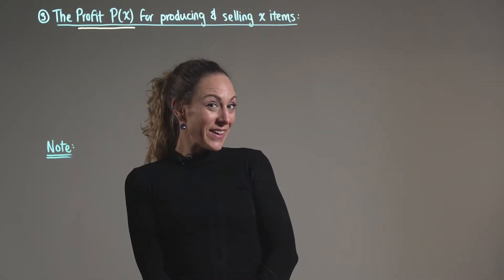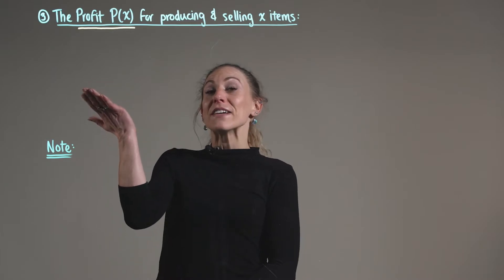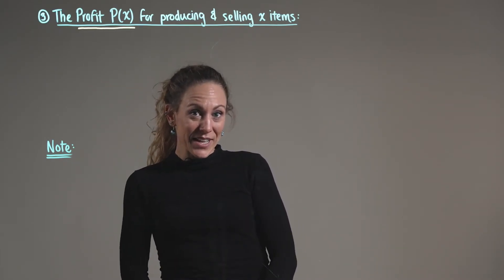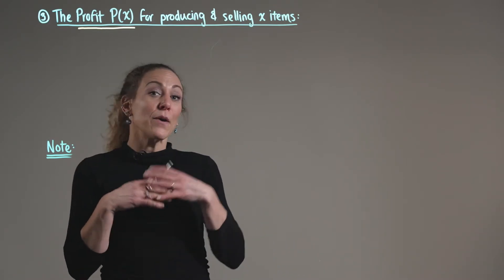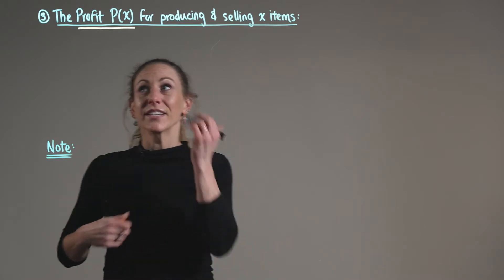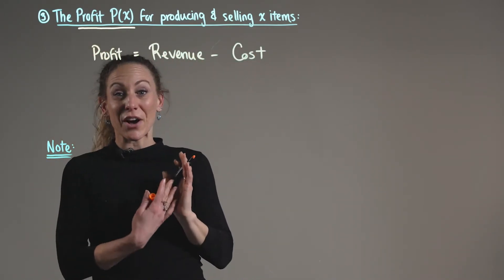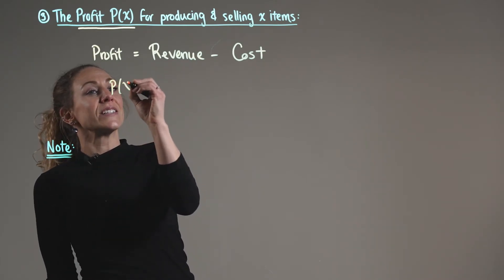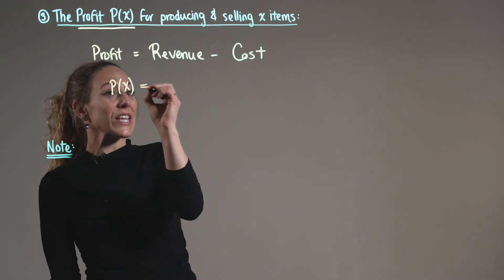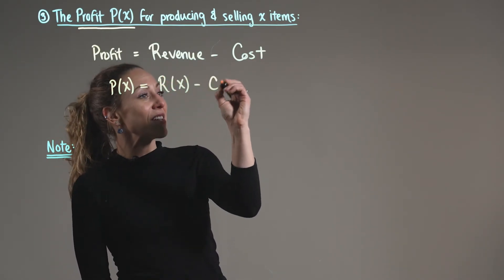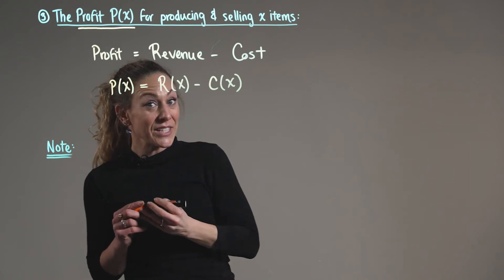Last but not least, the profit, P(x), for producing and selling x items is modeled by profit being equal to revenue minus cost. Using our function notation, we can say that this is defined as P(x) being equal to R(x) minus C(x) for total cost.